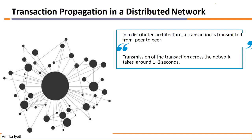In this architecture, nodes are directly or indirectly connected. All nodes collectively help in passing the information — all connected nodes work together to pass the transaction information to nearby neighbor nodes. In this way, within one or two seconds, the same information is passed across the entire network.